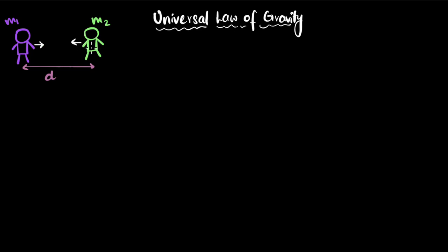And this force is called the force of gravity. And the universal law says that this force of gravity is equal to G times m1, which is the mass of the first object, times m2, the mass of the second object, divided by d squared, where d is the distance between their centers.